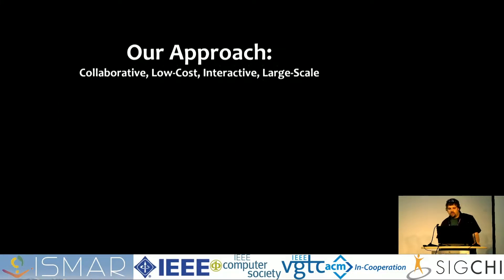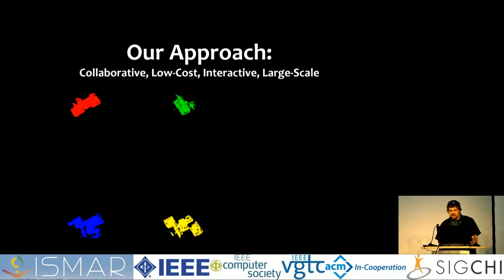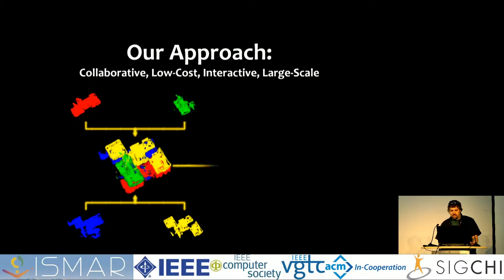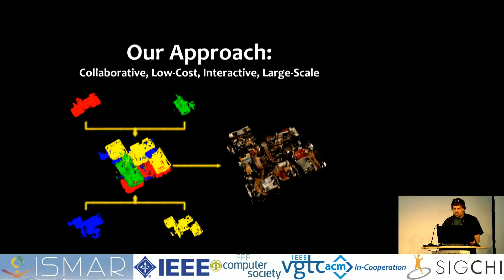So what do we do differently? Unlike these existing works, we let multiple agents wander around the environment to construct locally consistent sub-scenes, and then join up these sub-scenes to make a globally consistent map. This can be done using relatively low-cost hardware, and allows us to reconstruct accurate maps interactively at a much greater scale than was previously the case.